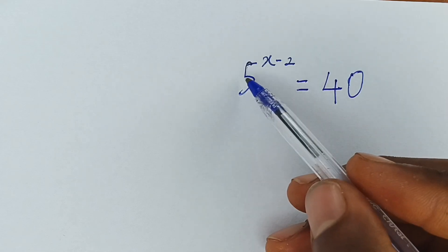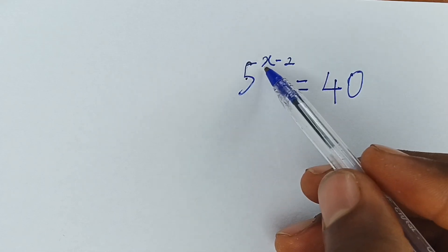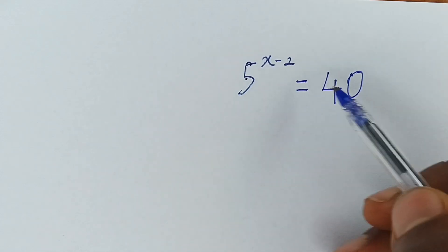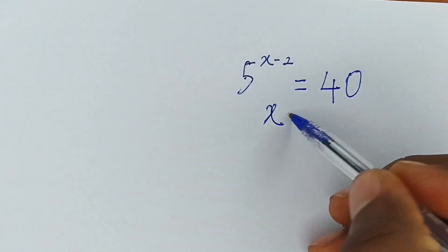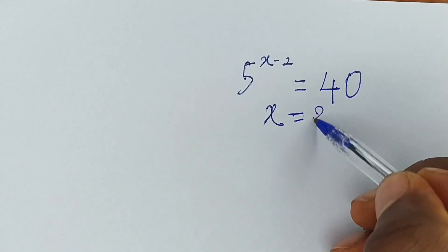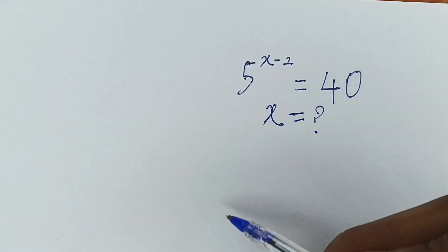Let's solve this together. It says 5 raised to the power x minus 2 is equal to 40. We are required to solve for the value of x.